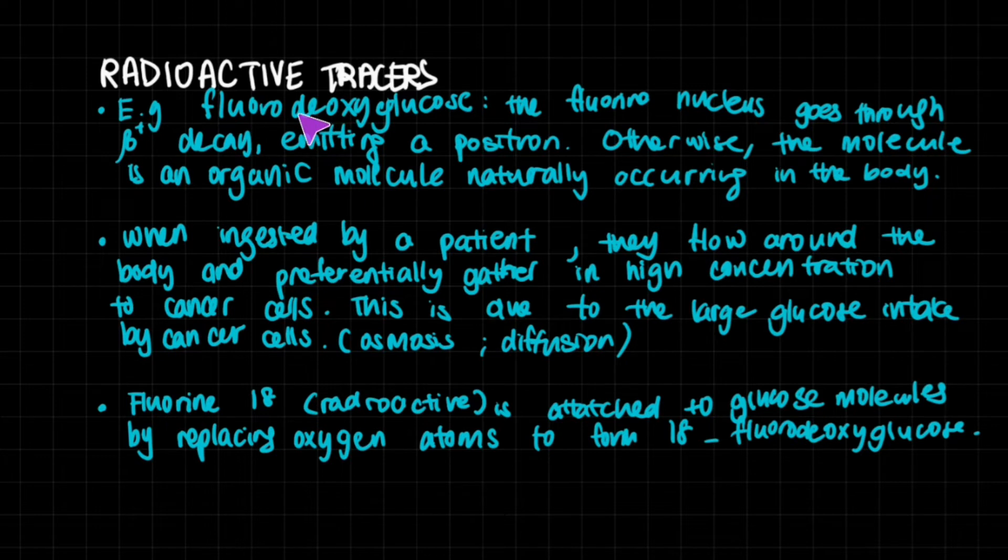Otherwise, the rest of the new molecule, the glucose part, is actually an organic molecule that naturally occurs in the body. The way that you do it is you attach the fluorine-18, which is radioactive, to glucose molecules by replacing oxygen atoms to form this. So you introduce this fluorodeoxyglucose into a patient. They can ingest it, they can take it by their mouth, or they could also have it injected into their bloodstream.